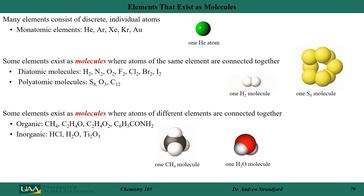Many elements in the periodic chart actually exist as discrete individual atoms. An example of that would be helium — I can go out and find one atom of helium and isolate it. There are several other elements that exist as monatomic elements, like argon, xenon, krypton, and many of the metals can be monatomic also.